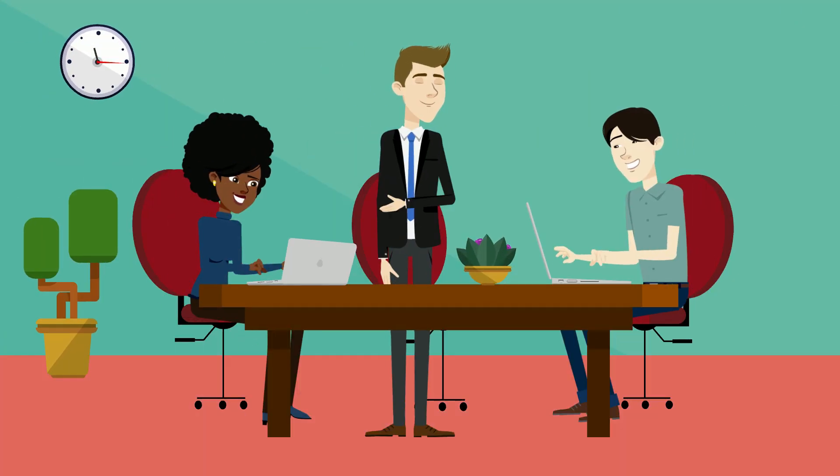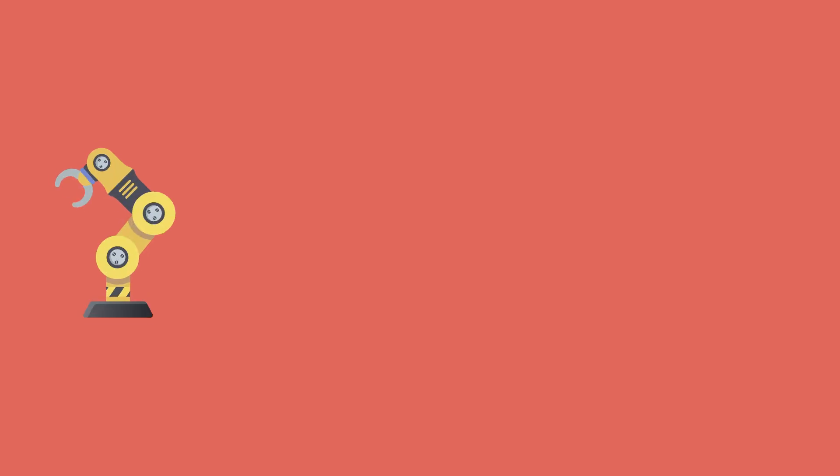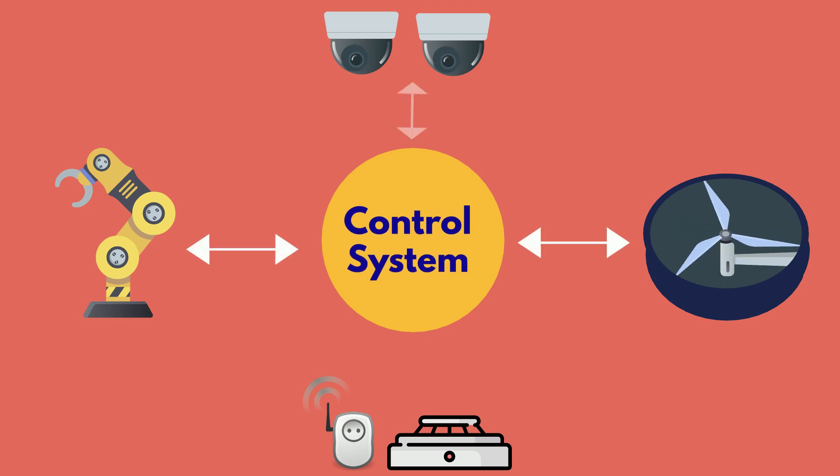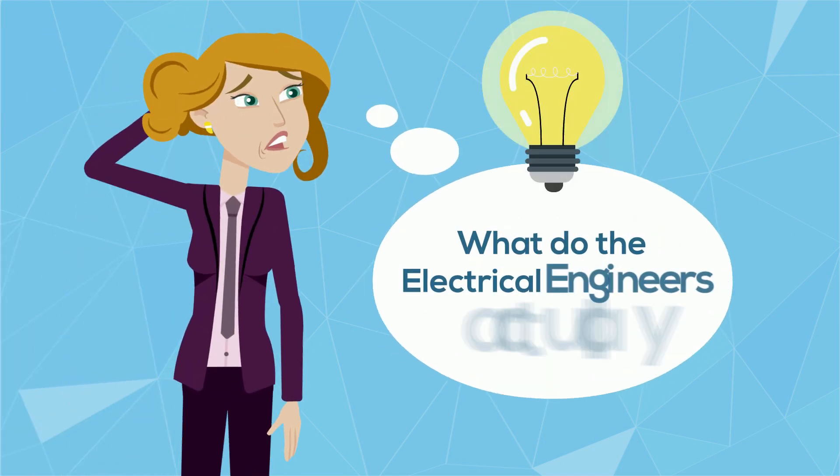But what if our engineer instead was working on the electrical aspects of the design? Well, first off, they'd be collaborating with the mechanical engineers to ensure they're supplying the right control signals to and from the various mechanical devices. They aren't far from the software engineers either, as they are sourcing all the hardware that the hefty programming needs to run on. But enough with collaboration. What do they actually do?